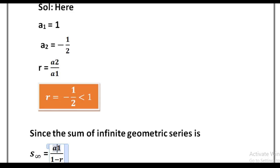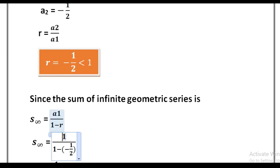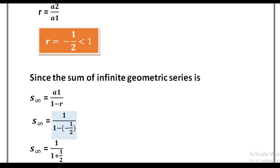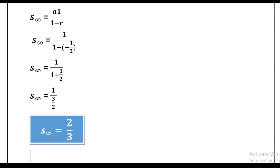Since the sum of an infinite geometric series S∞ = a1 divided by (1 minus r), by putting the values: a1 = 1, divided by 1 minus (minus 1/2). Since minus into minus is plus, we get 1 divided by (1 plus 1/2), which is 1 divided by (3/2). This can also be written as 2 divided by 3. So S∞ is equal to 2 divided by 3, which is the required solution.